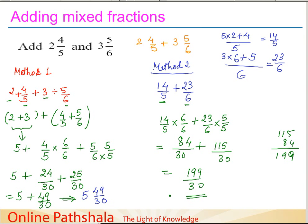These two answers must be the same. Converting 5 and 49/30 to an improper fraction: 30 times 5 is 150, plus 49 gives 199, so 199/30. Both methods give the same answer of 199/30, confirming they are equivalent.